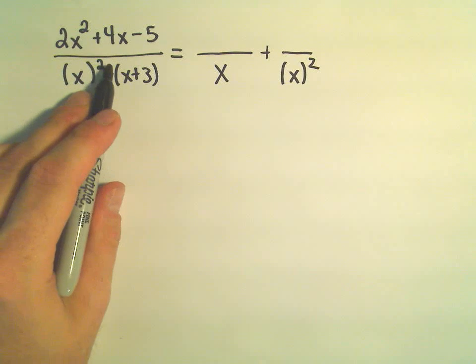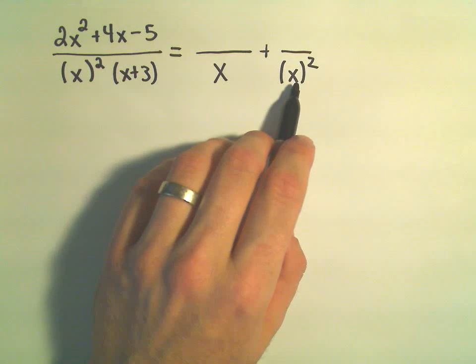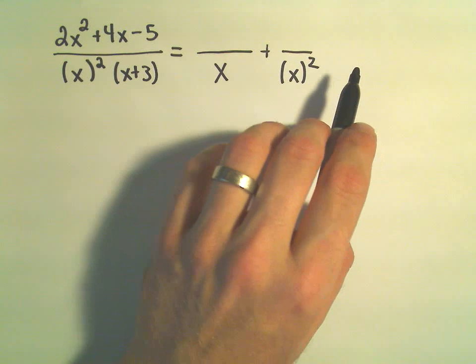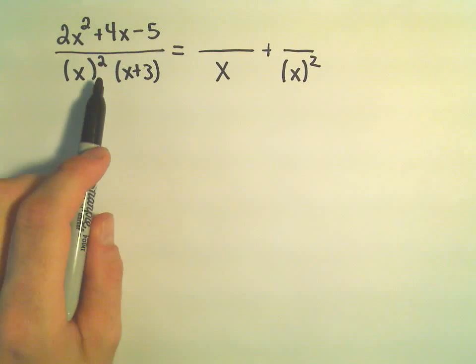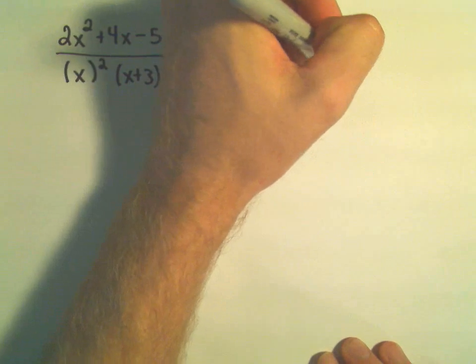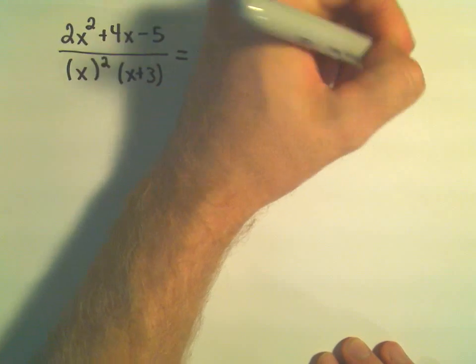If this had been like x to the 20th power, we would have an x. We would have a fraction with x squared in the denominator. We would have x cubed, x to the 4th, to the 5th, to the 6th, to the 7th, all the way up to x to the 20th. We also have our x plus 3.